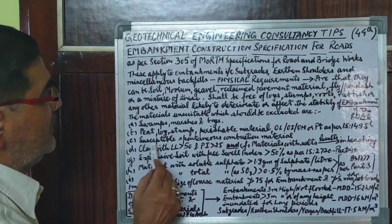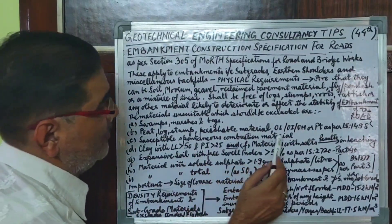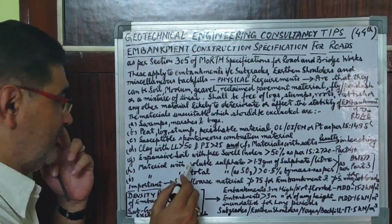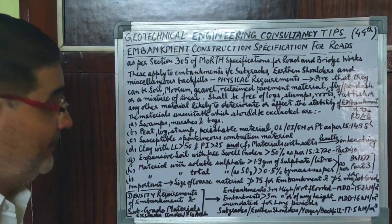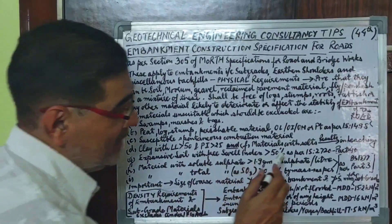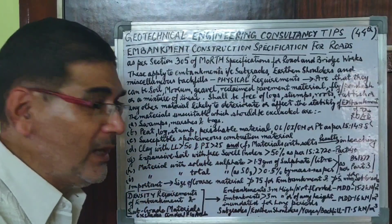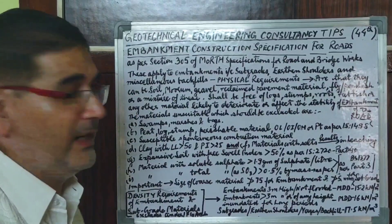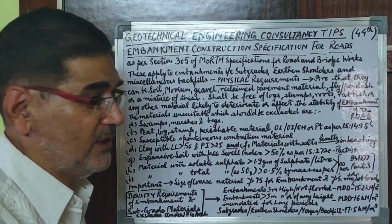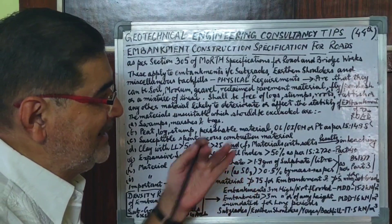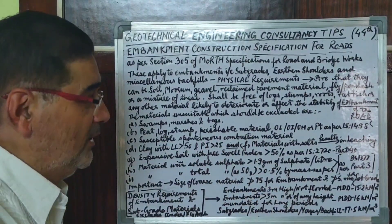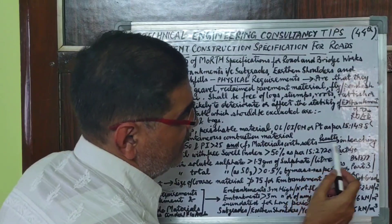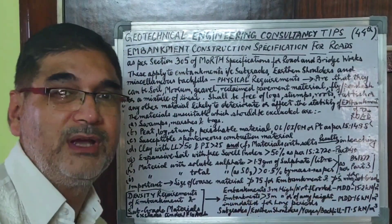Other things to be excluded are any material susceptible to spontaneous combustion, or clays with liquid limit greater than 50 and plasticity index greater than 25. Additionally, materials with harmful salts — such as carbonates, bicarbonates, chlorides, or sulfates — or with a pH value that may be detrimental to road construction, meaning any material with salts which may result in leaching of the embankment, should also be avoided.